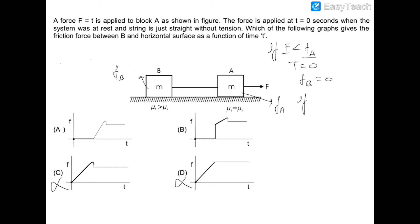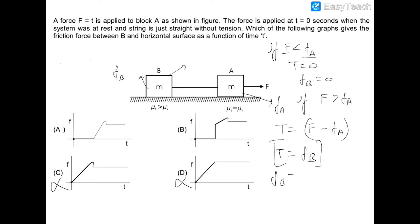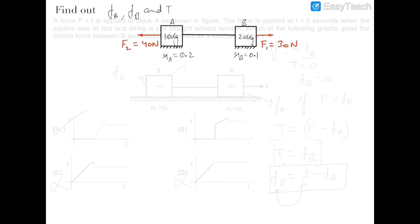Once F exceeds F_A, friction on block B starts to act. Tension in the rope becomes F minus F_A, which equals the friction on B (while the system is not moving). Substituting F as a function of time gives friction as a linear function of time — a straight line with a negative intercept and positive slope on a friction vs. time graph. Therefore the correct choice is option A.